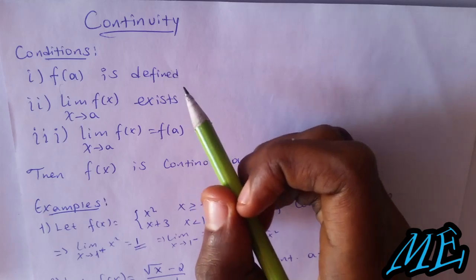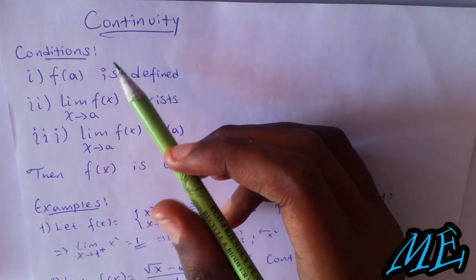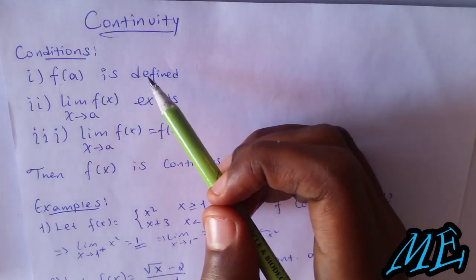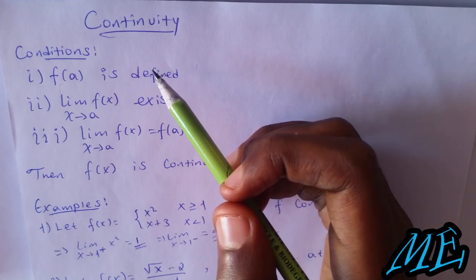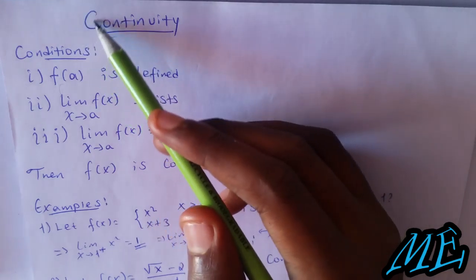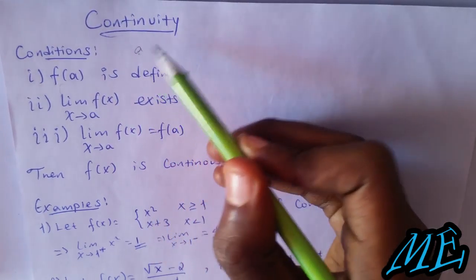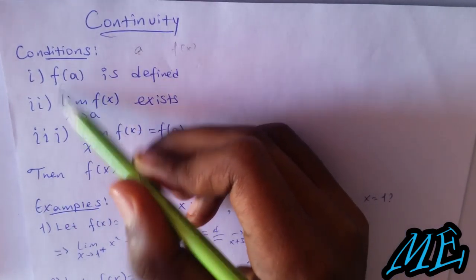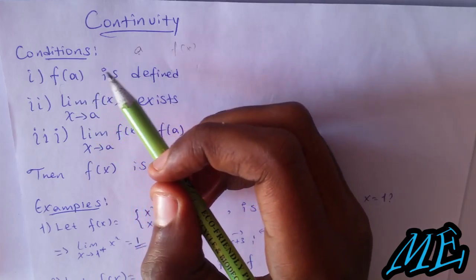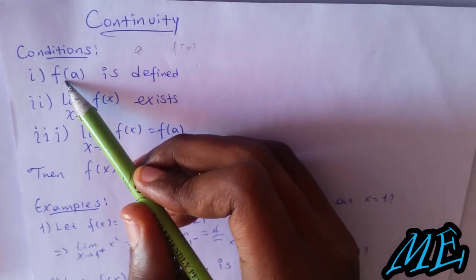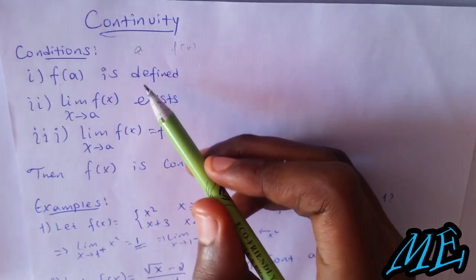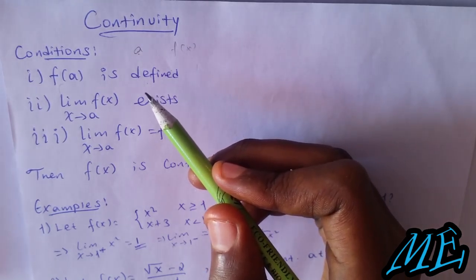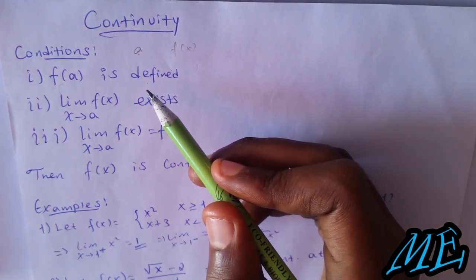I'm talking about continuity in general. Continuity, condition, and function continuous or not. If we call this particular point A, then f is continuous at A if these conditions are satisfied. First, f(a) is defined.